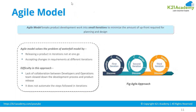After waterfall, the next model that became famous is the agile model. Before cloud came into picture, agile methodology was booming in almost all organizations — every project was going to follow agile. The agile model breaks the product development into small iterations to minimize the amount of upfront planning and designing required.